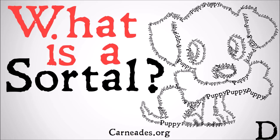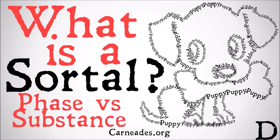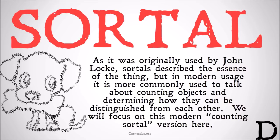As it was originally used by John Locke, sortals describe the essence of a thing. But in modern usage, sortals are more commonly used to talk about counting objects and determining how they can be distinguished from each other — how specific objects can be distinguished from each other. We're going to focus on this modern counting sortal version here.